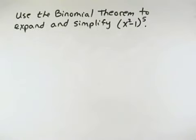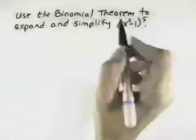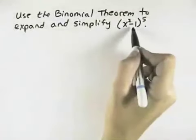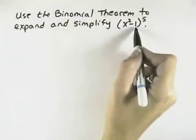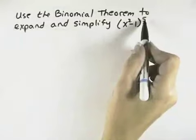We want to use the binomial theorem to expand and simplify the quantity x squared minus 1 to the fifth power.